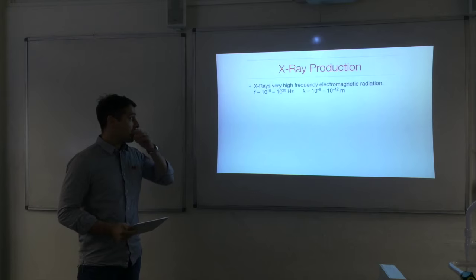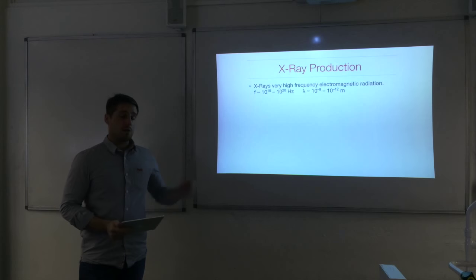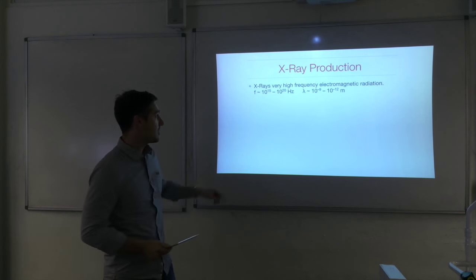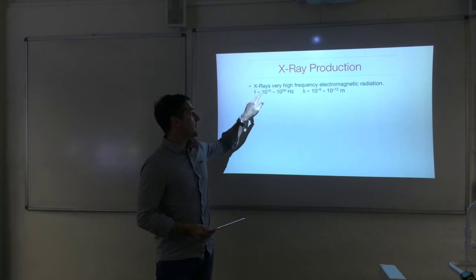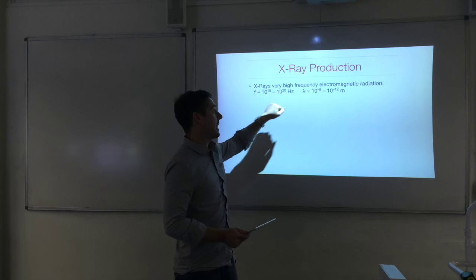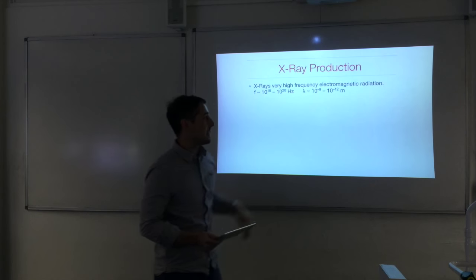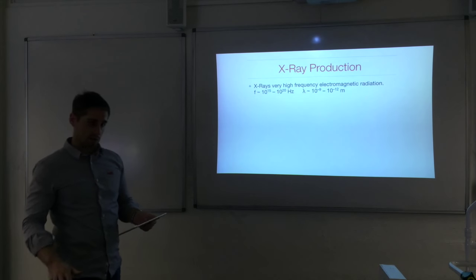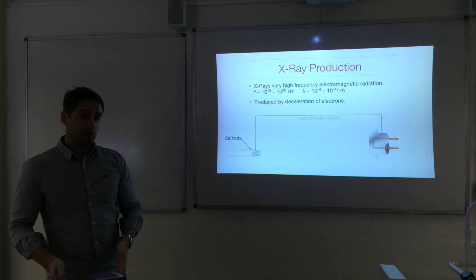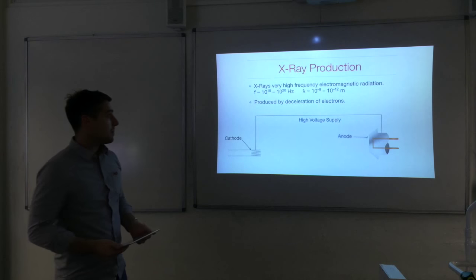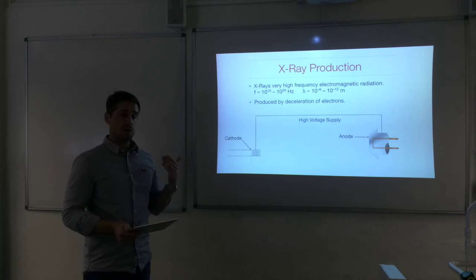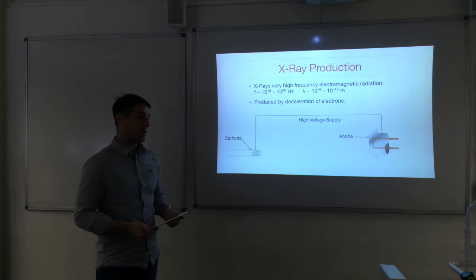X-rays are very high frequency electromagnetic radiation, with frequency in the range of 10 to the 15 to 10 to the 20 hertz and a wavelength in the range of 10 to the minus 9 to 10 to the minus 12 meters. The way that x-rays are produced is by the deceleration of electrons — the electrons need to undergo a large deceleration.